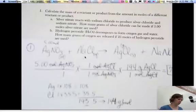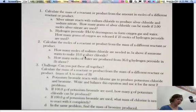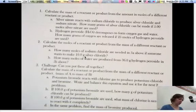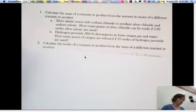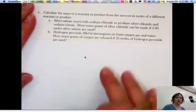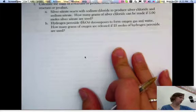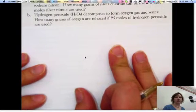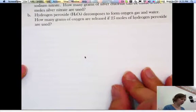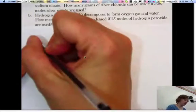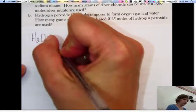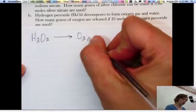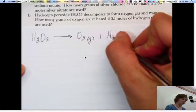Let's try another problem. This one is Part B. Hydrogen peroxide, H2O2, decomposes to form oxygen gas and water. How many grams of oxygen are released if 25 moles of hydrogen peroxide are used? Let's start with our reaction. Hydrogen peroxide is H2O2. It decomposes to form oxygen gas and water, which would be a liquid at room temperature.